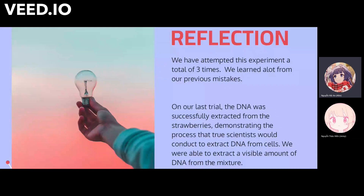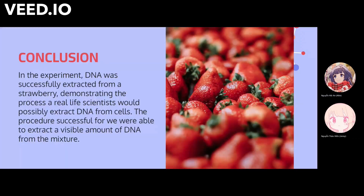This time we used rubbing alcohol, poured it gently, and did not stir the mixture — we just left it to sit for a while. Then the strawberries' DNA successfully formed from the liquid. In the experiment, DNA was successfully extracted from the strawberries, demonstrating the process real-life scientists would use to extract DNA from cells. This procedure was successful and we were able to extract a visible amount of DNA from the mixture.